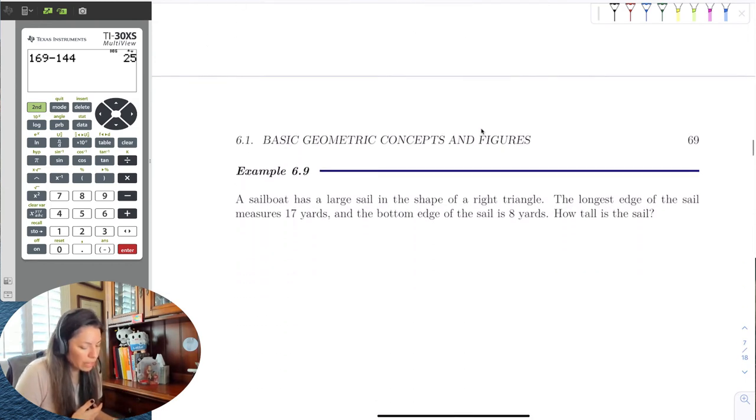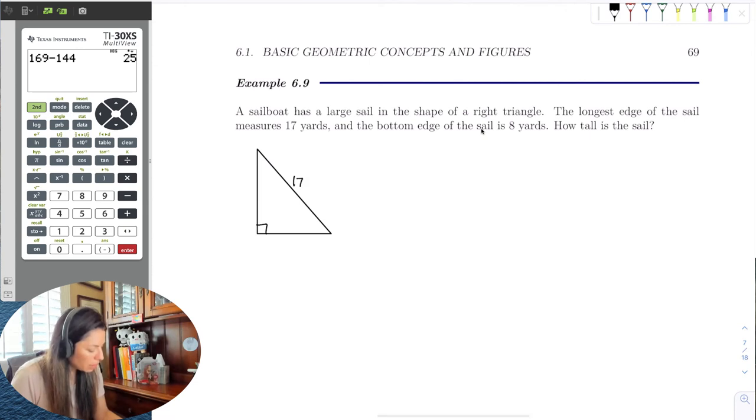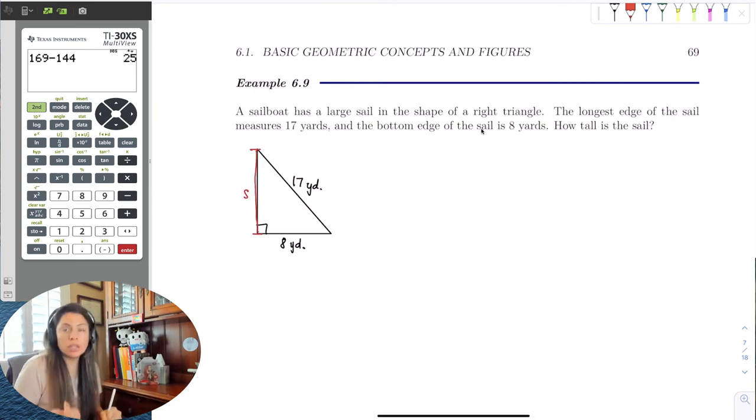Okay, let's try an application of the Pythagorean Theorem. It says a sailboat has a large sail in the shape of a right triangle. Okay, and the longest edge of the sail measures 17 yards. So the longest edge is 17 yards and the bottom edge is 8 yards. How tall is the sail? So here's the sail. So you're actually not looking for the hypotenuse, right? You're looking for one of the legs.